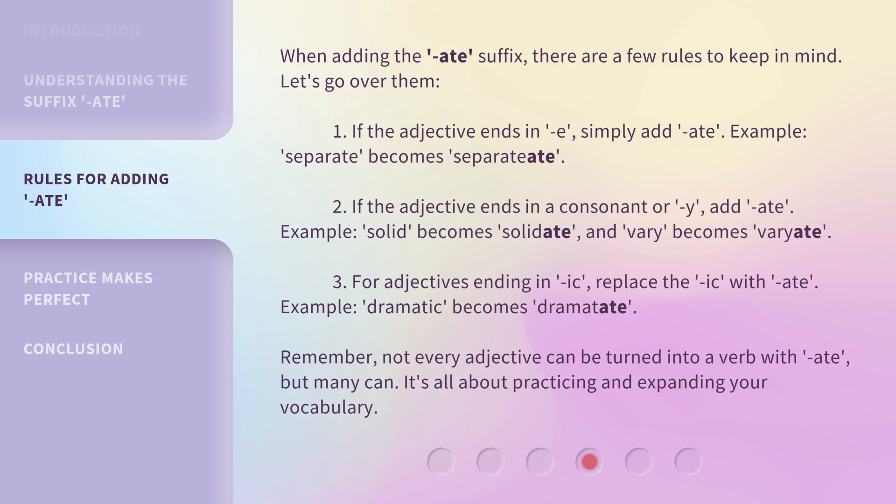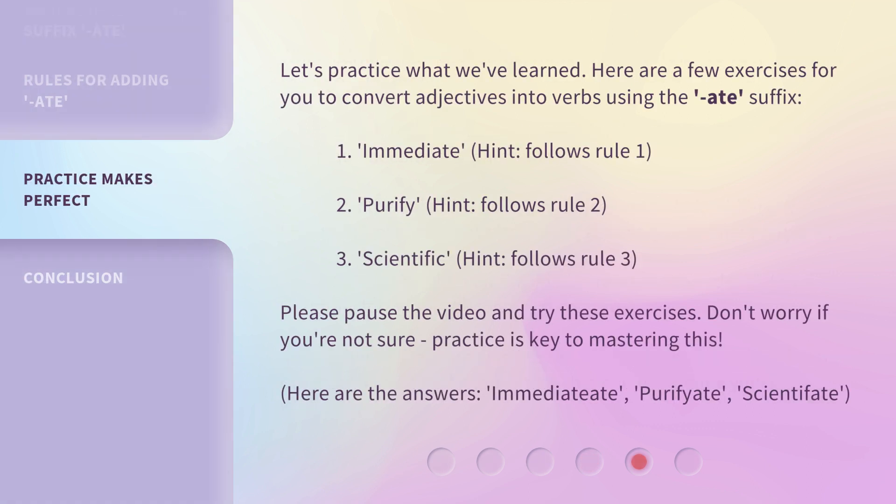It's all about practicing and expanding your vocabulary. Let's practice what we've learned. Here are a few exercises for you to convert adjectives into verbs using the -ate suffix: 1. 'Immediate' — hint: follows Rule 1. 2. 'Purify' — hint: follows Rule 2. 3. [Third word] — hint: follows Rule 3. Please pause the video and try these exercises. Don't worry if you're not sure — practice is key to mastering this.